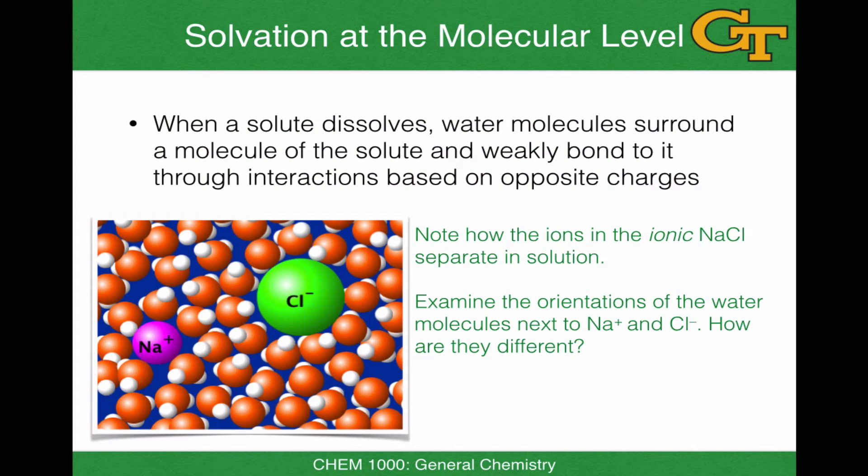Now let's think about what solvation looks like at the molecular level. When a solute dissolves, water molecules surround it. So for example, when NaCl dissolves, the solid NaCl crystal, which is a repeating lattice of sodium and chloride ions, breaks apart into separated sodium plus and Cl minus ions. Something that's worth paying attention to here is the orientation of the water molecules with respect to each ion.